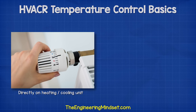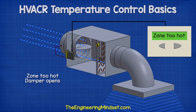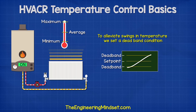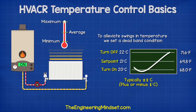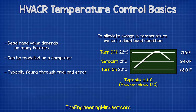The thermostat could be located on the output device, like a thermostatic radiator valve, or remotely, like a room thermostat which controls the position of a damper in a fan coil unit. To alleviate swings in temperature, we set a deadband condition, typically plus or minus 1 degree Celsius from the required temperature. For example, if we want a room temperature of 21 degrees Celsius, with a deadband of plus or minus 1 degree, the heating will turn on when the room temperature falls below 20 degrees Celsius and switch off when it is above 22 degrees Celsius, giving us an average temperature of 21 degrees Celsius. The deadband value depends on many factors — it can be modelled on a computer, but generally it is found through trial and error with small incremental changes to find the optimal point where the room is comfortable and the system operates efficiently.